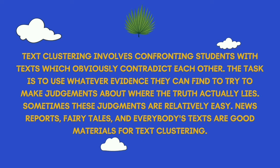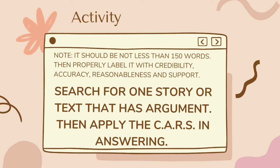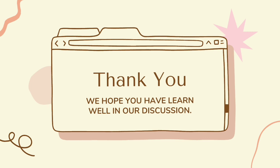Lastly, we will discuss text clustering. Text clustering involves confronting students with texts which obviously contradict each other. The task is to use whatever evidence they can find to try to make a judgment about where the truth actually lies. Sometimes these judgments are relatively easy. News reports, fairy tales, and everyday texts are good materials for text clustering. Here's our activity: note, it should be not less than 150 words. Then, properly label it with credibility, accuracy, reasonableness, and support. You have to search one story or text to test the argument. Then, apply CARS in answering. Thank you for watching. We hope you have learned well in our discussion.